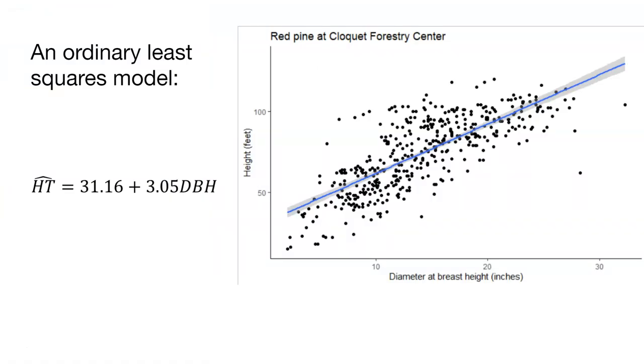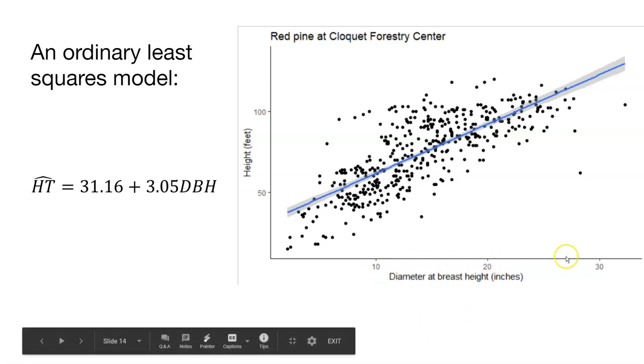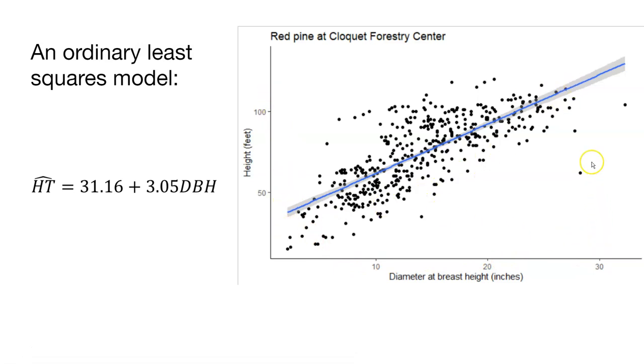Here's the ordinary least squares model in a snapshot of the data. We've got diameter at breast height on the x-axis, height on the y-axis. As you can see, trees that are large in diameter are also tall in height. We have a pretty nice correlation here. I'm showing here the linear regression line and these are the 95% confidence intervals around the regression line.